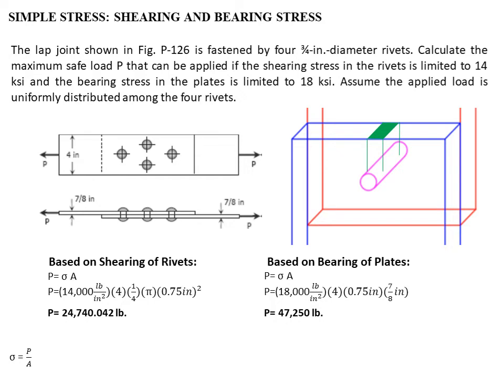From the formula stress = P / A, considering shearing of rivets, we apply the allowable load based on bearing of plates: 47,250 pounds divided by the rivet area. The resulting stress is 26,738.027 psi, which is more than the allowable of 14,000 psi. So if we apply this load, the rivets will be over-stressed.